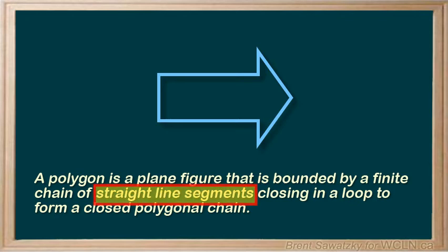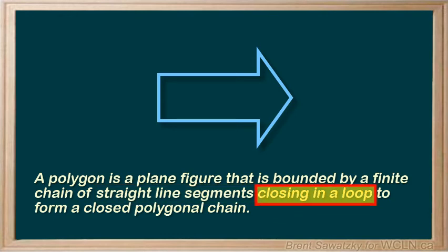We also notice that it's completely closed, no gaps, and nothing's crossing. So, it's a loop. Thus, a bordered arrow is a polygon.